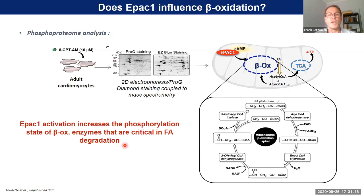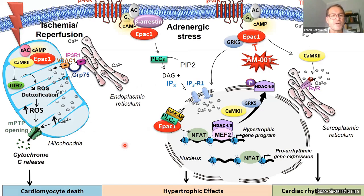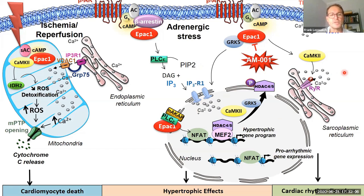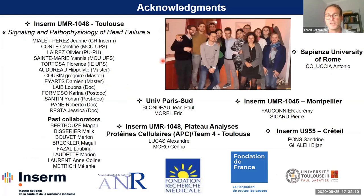In summary, this complex cartoon shows that EPAC-1 dysregulates multiple subcellular compartments. Inside the mitochondria, EPAC-1 interacts with CaMKinase 2 to influence ROS production and calcium overload. In the nucleus, it can regulate transcription factors and epigenetic regulation to induce hypertrophic gene programs. It is also involved in regulation of the ryanodine receptor, which may participate in cardiac arrhythmia. I would like to acknowledge all my colleagues in my laboratory and all the partners involved in this work. Thank you very much.